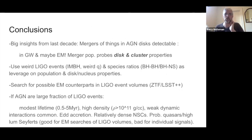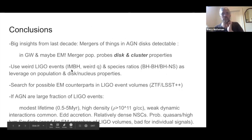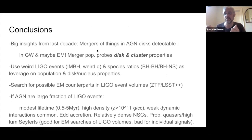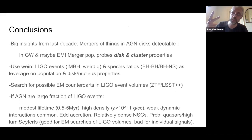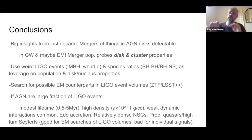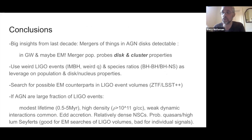In conclusion: the big take-home is that there are things in AGN discs, they can merge, those mergers are detectable in gravitational waves and potentially electromagnetically, and the properties of those mergers tell you something about the properties of the disc and the nuclear star cluster that allows these mergers to happen.